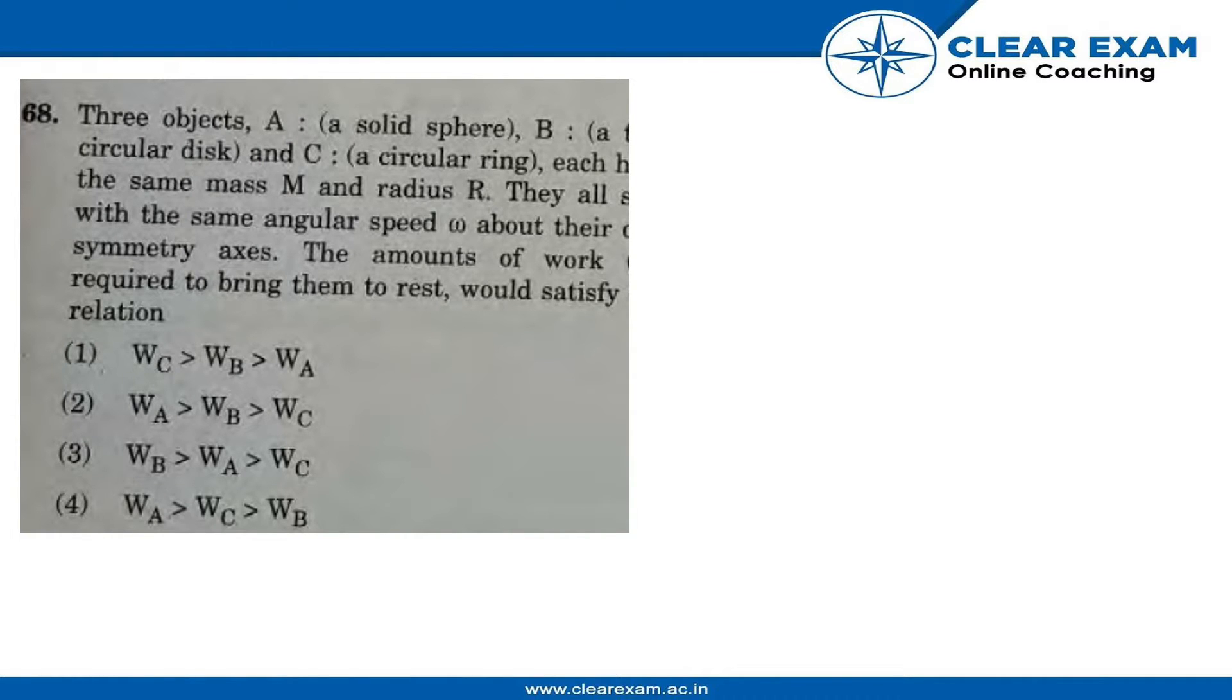Three objects: A (a solid sphere), B (a circular disk), and C (a circular ring), each has the same mass M and radius R. They all rotate with the same angular speed ω about their symmetry axes. The amount of work required to bring them to rest would satisfy which relation?